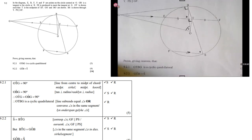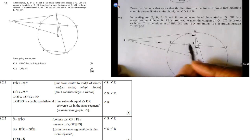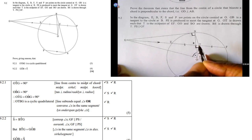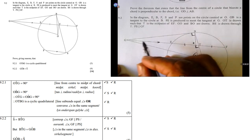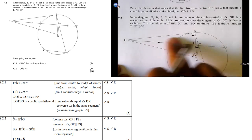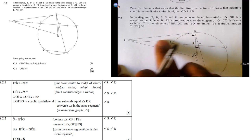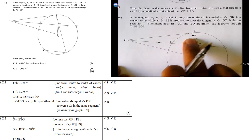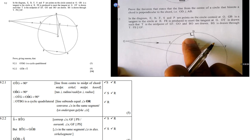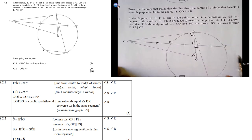OTBG. So, it is this quadrilateral here. Prove that it is a cyclic quadrilateral. Now, you must remember, when is a quad a cyclic quadrilateral? Remember the different situations. Now, in this case,